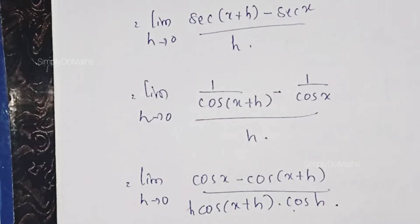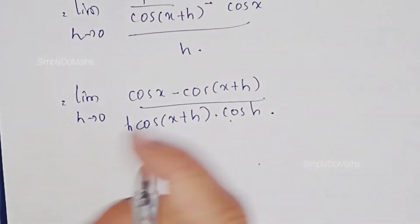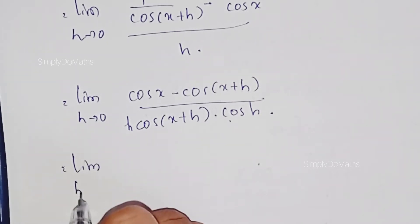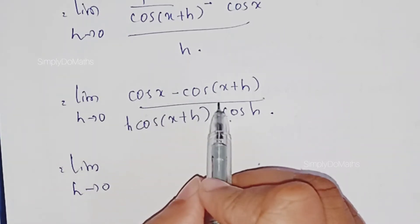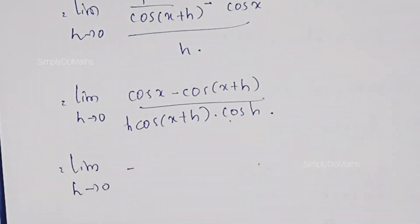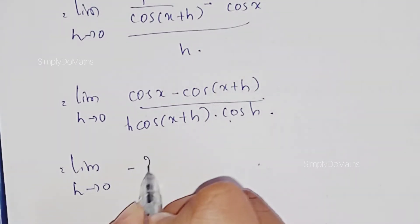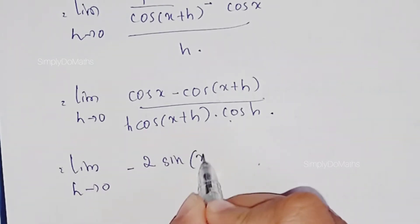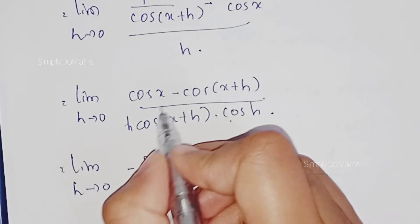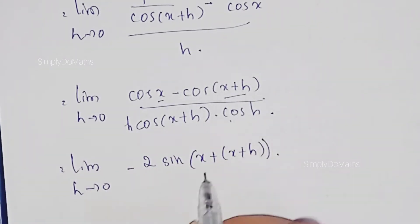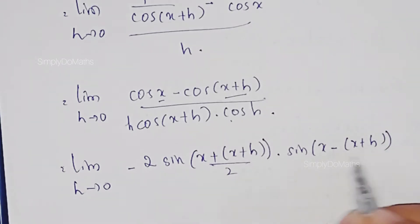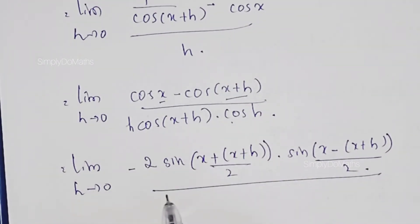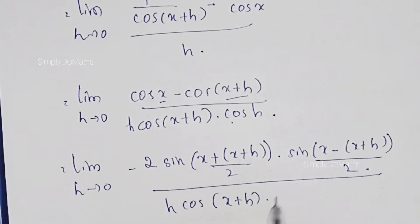Bringing h to the denominator, this can be written as limit as h tending to 0. The numerator cos x minus cos of x plus h is in the form cos A minus cos B, which equals 2 sin of A plus B by 2 times sin of A minus B by 2. So this becomes minus 2 sin of x plus x plus h divided by 2, into sin of x minus x plus h divided by 2, all divided by h into cos of x plus h into cos x.